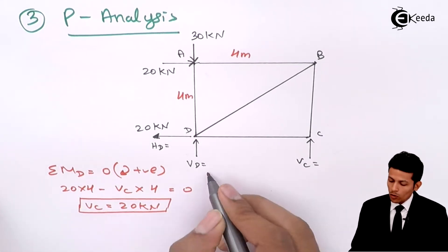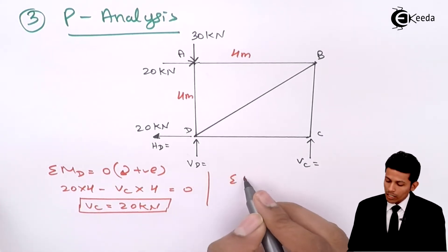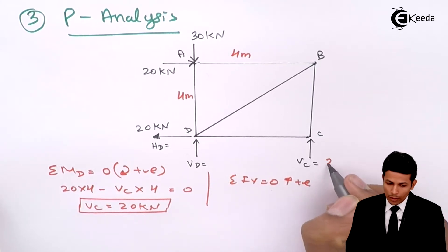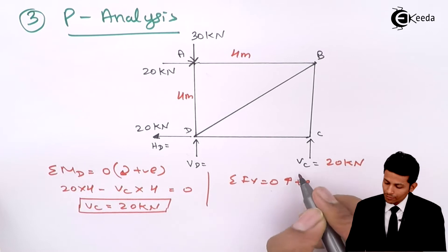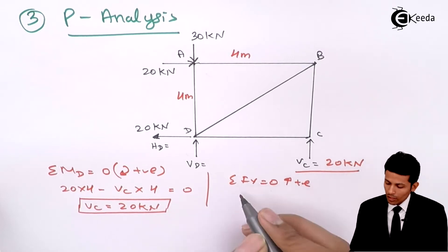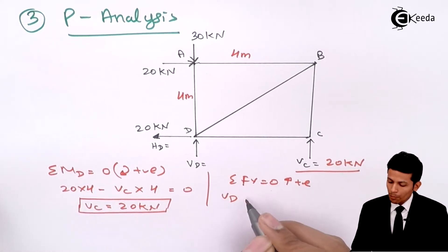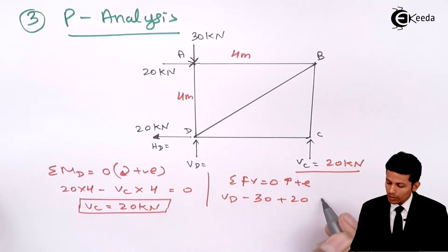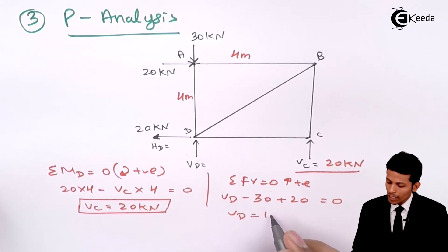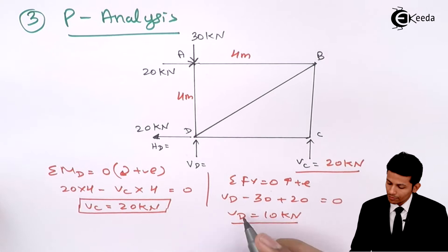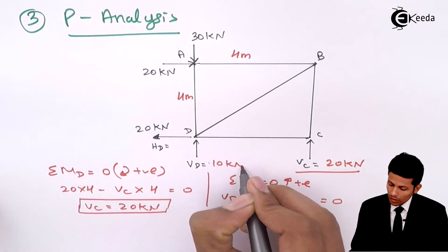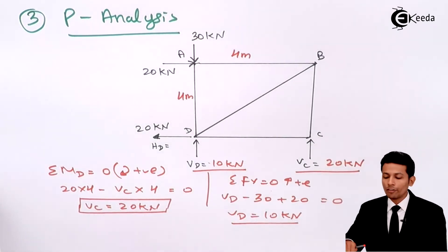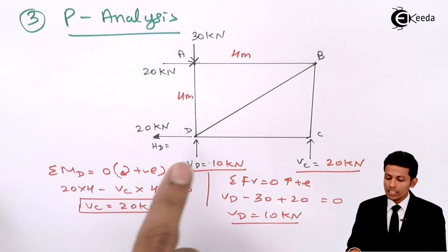Now applying summation FY equal to zero, upward positive: VD minus 30 plus 20 equals zero, therefore VD equals 10 kN. So we have VC equal to 20 kN and VD equal to 10 kN as our support reactions.